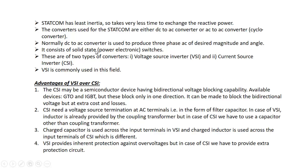STATCOM consists of solid-state power electronics. Voltage source inverter (VSI) is used rather than current source inverter (CSI), because of the advantages VSI has over CSI. The CSI may require semiconductor devices with bi-directional voltage blocking capability. Available switching devices such as GTO and IGBT block only in one direction; making them bi-directional adds extra cost and extra losses, so CSI may not be preferred.